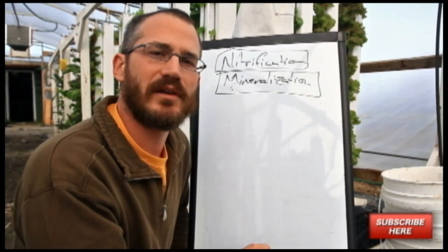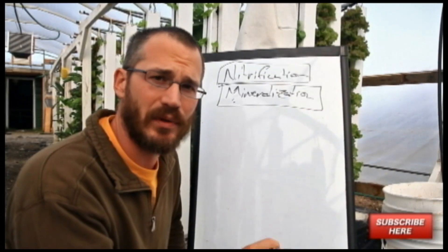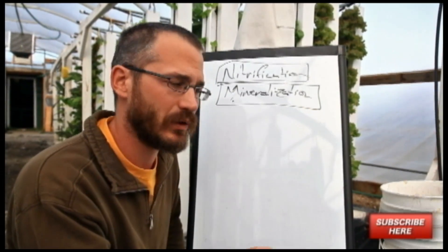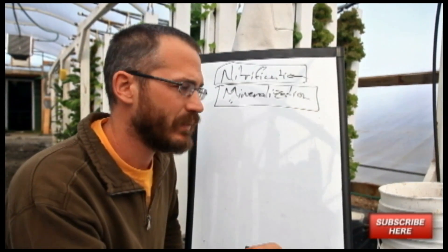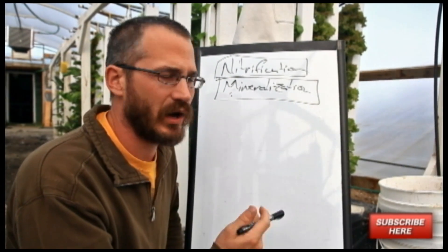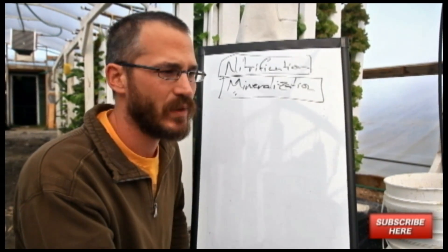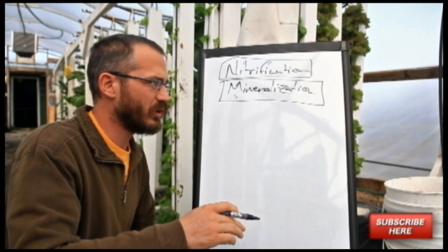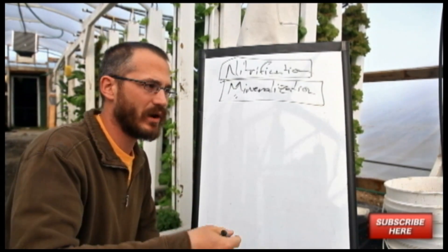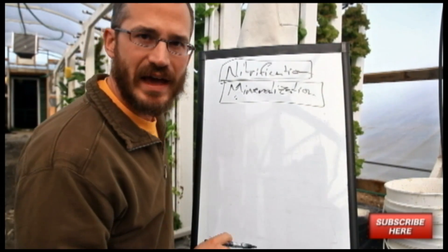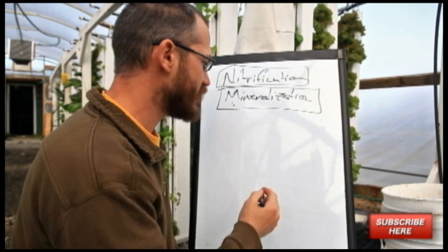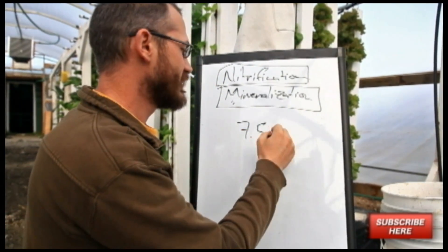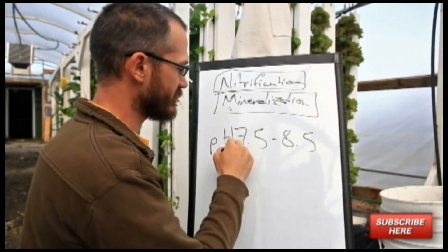But the reality of the situation is that it's much more complex than that. It's not quite that simple. There are a lot of different bacteria that oxidize ammonia and oxidize nitrite to produce nitrate. A lot of traditional aquaponics folks will say that nitrification happens best in the range of 7.5 to 8.5, somewhere in a pH range like this.